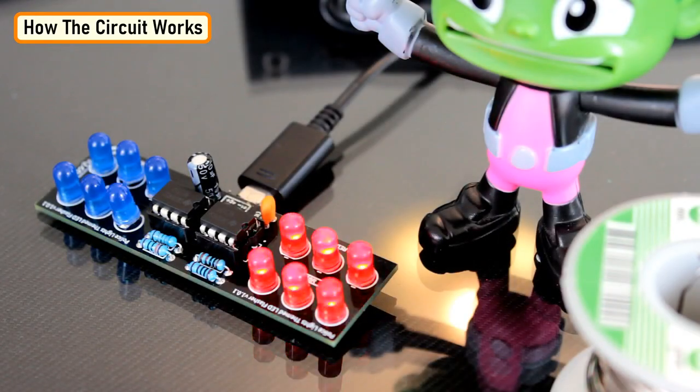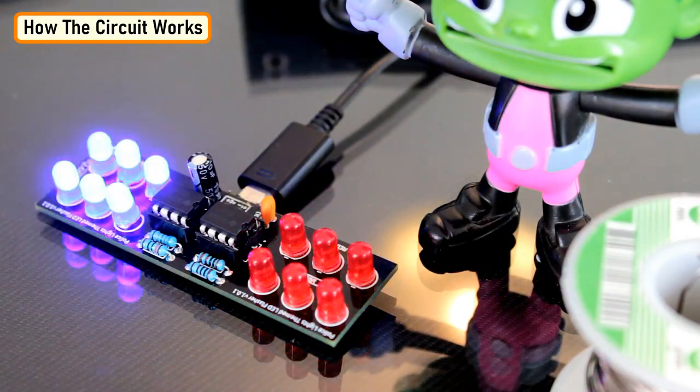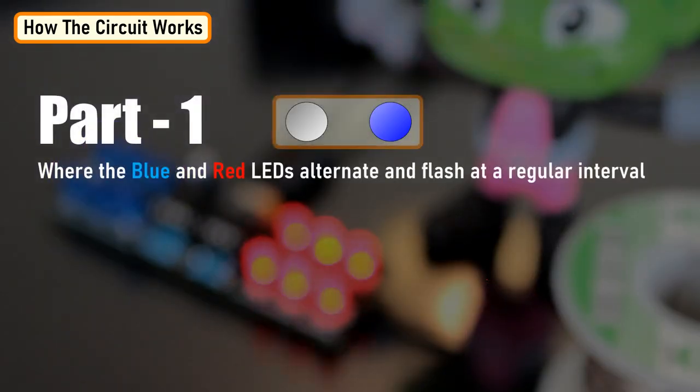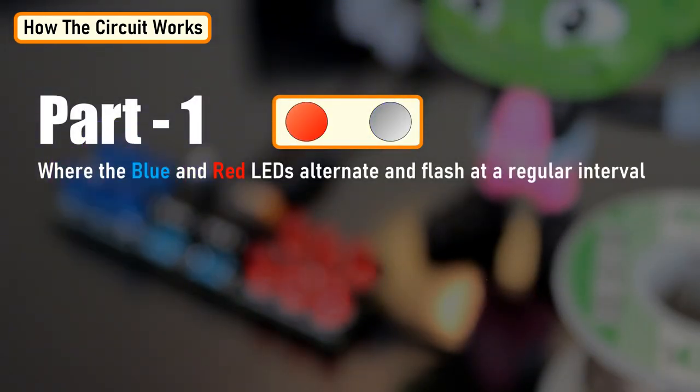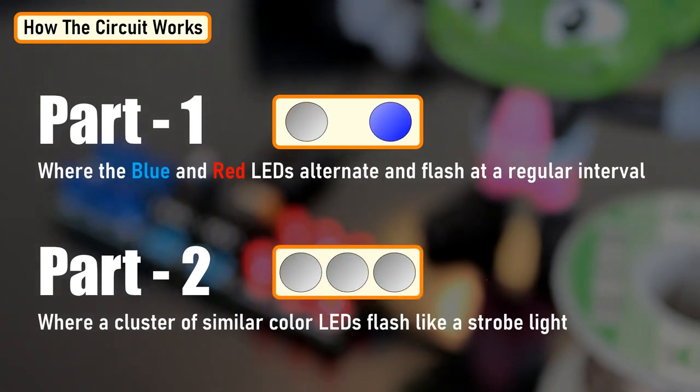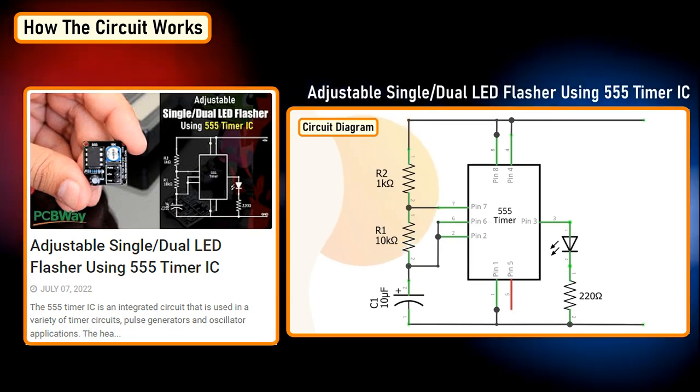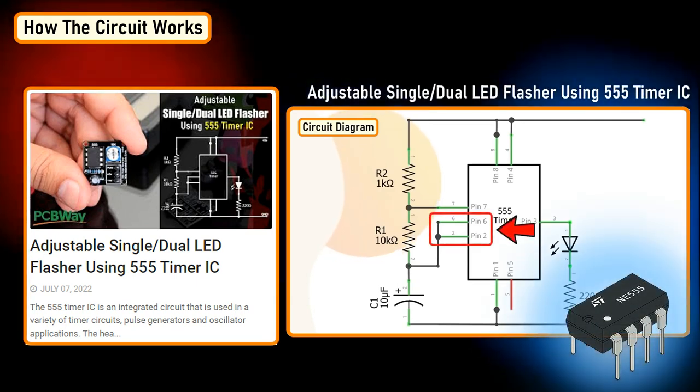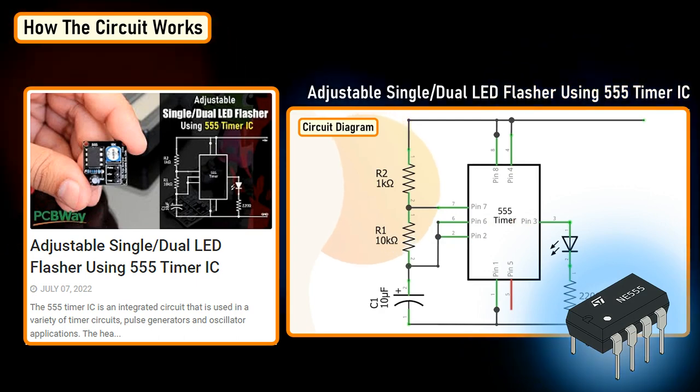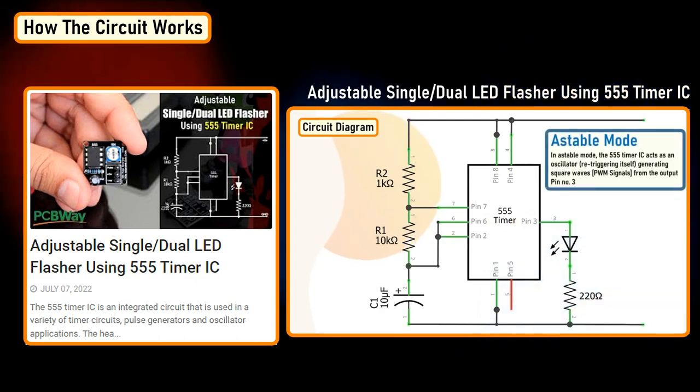Now let's try to understand how this circuit works. The circuit has two parts. Part one where the blue and the red LED alternate and flash at a regular interval. Part two where a cluster of similar color LEDs flash like a strobe light. In my previous tutorial, adjustable single dual LED flasher using 555 timer IC, I showed you guys how to configure 555 timer IC to operate in an astable mode.